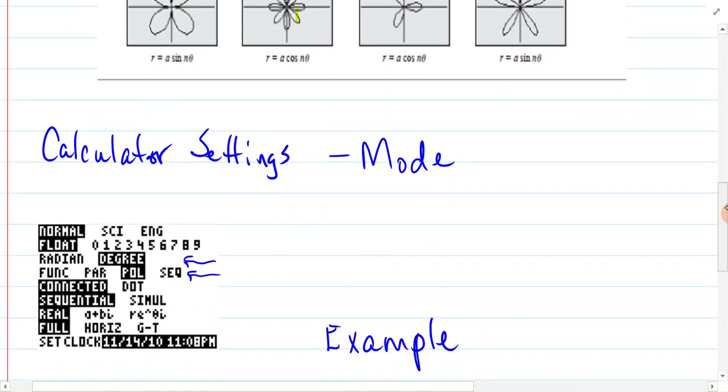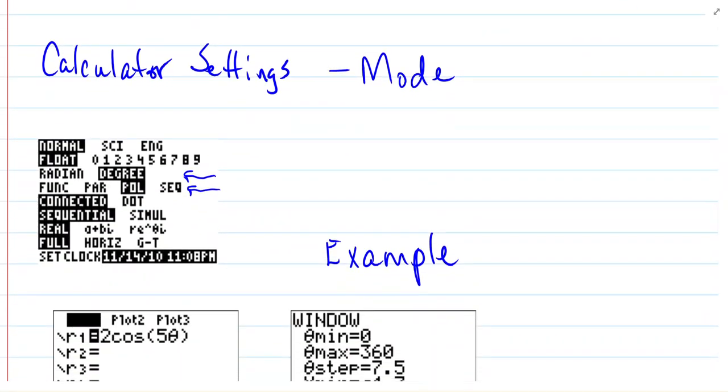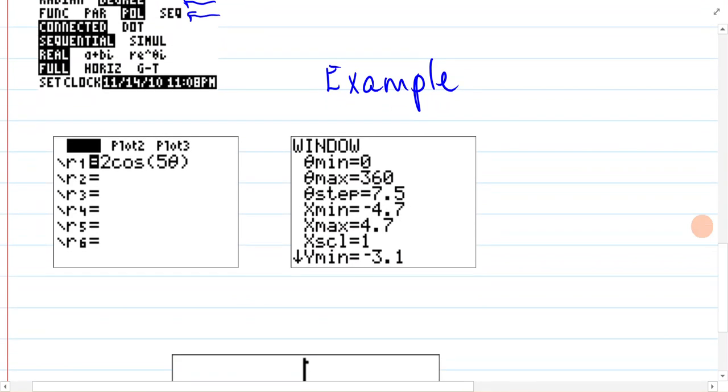Now as far as our calculator, we do want to be in degree mode and we want to be in polar. So those two need to happen. And then you're going to put it in just like it reads, 2 cosine 5 theta.